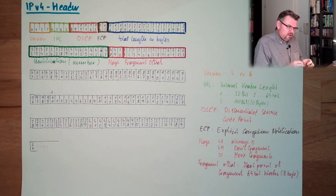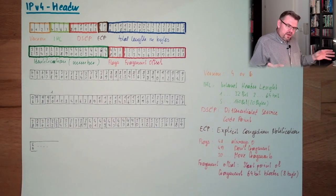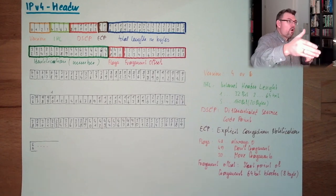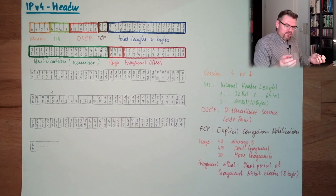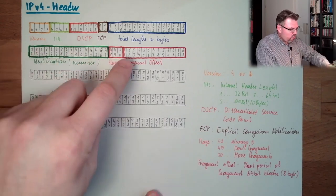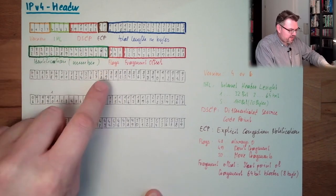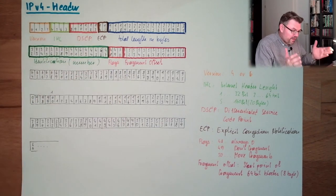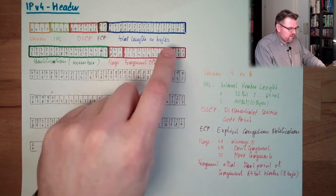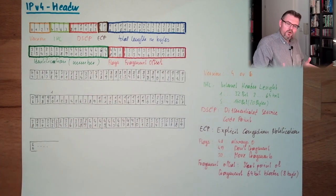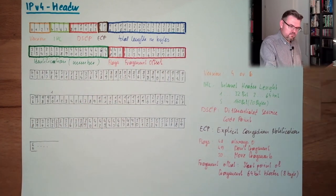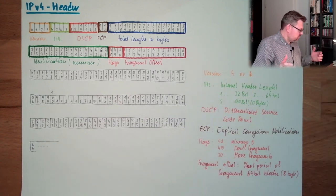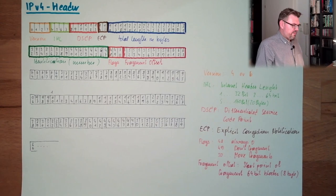This fragment offset always tells at which position this fragment belongs in 8 byte counts. Fragment 0 is at 0. Fragment 1 is at 8 bytes. Fragment 2 is at 16 bytes and so on. This is the fragment offset.